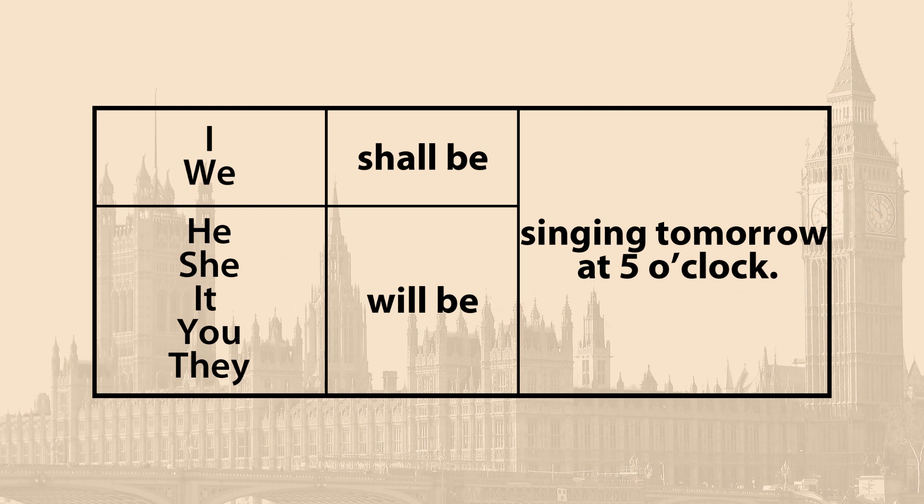Future Continuous служит для выражения длительного действия в будущем. Это действие будет происходить в определённый момент будущего. Для того чтобы построить утвердительное высказывание во Future Continuous, нам потребуется глагол-связка to be в будущем времени — will be. На конец смыслового глагола мы поставим окончание -ing, характерное для всей группы Continuous. Например: I will be singing tomorrow at five o'clock. They will be singing tomorrow at five o'clock. She will be singing tomorrow at five o'clock.